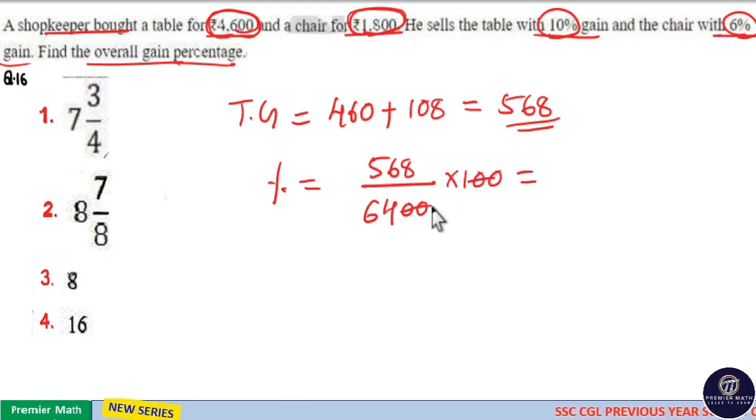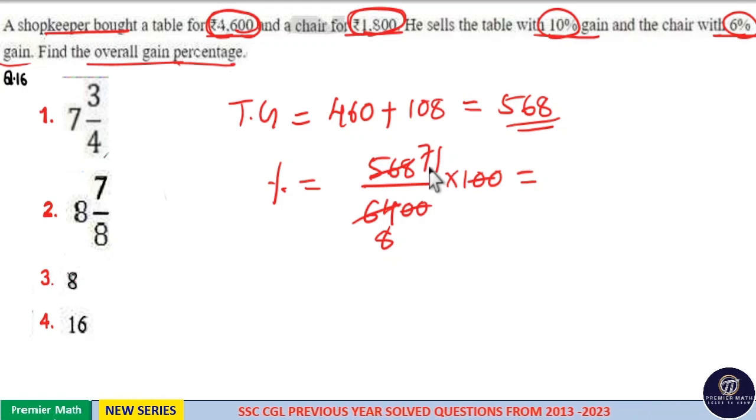Now, 8 goes 8 times in 64. 8 goes 7 times in 56. 8 goes 1 time in 8. So, 71 by 8 means 8 goes 9 times in 72. So, it is nearly 9. Here nearly 9 is option 2.